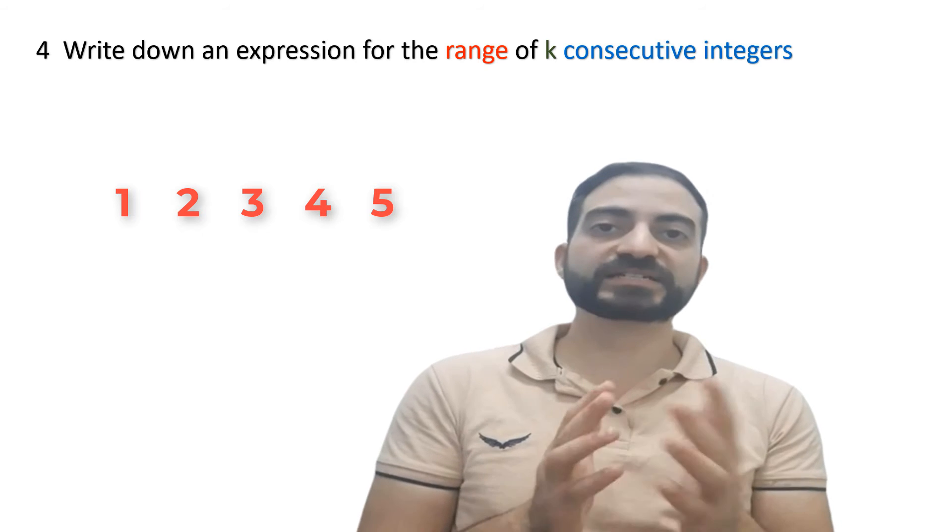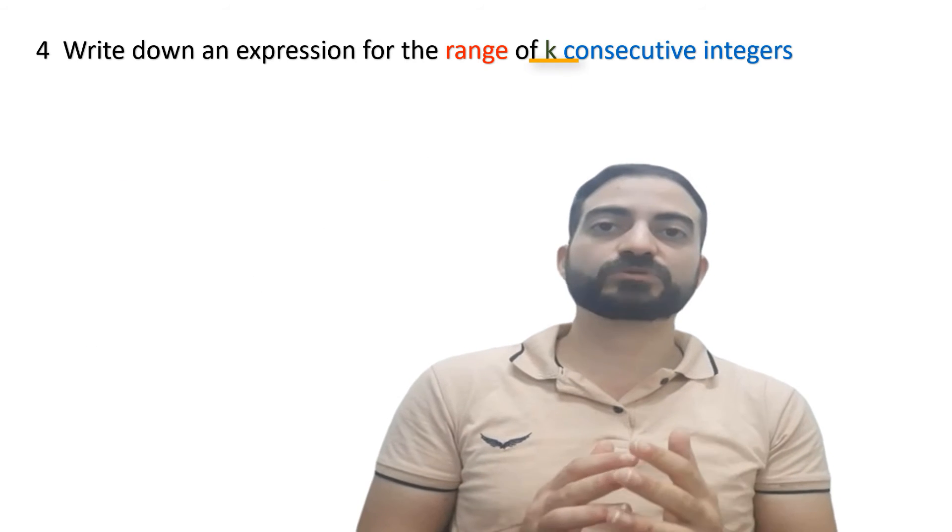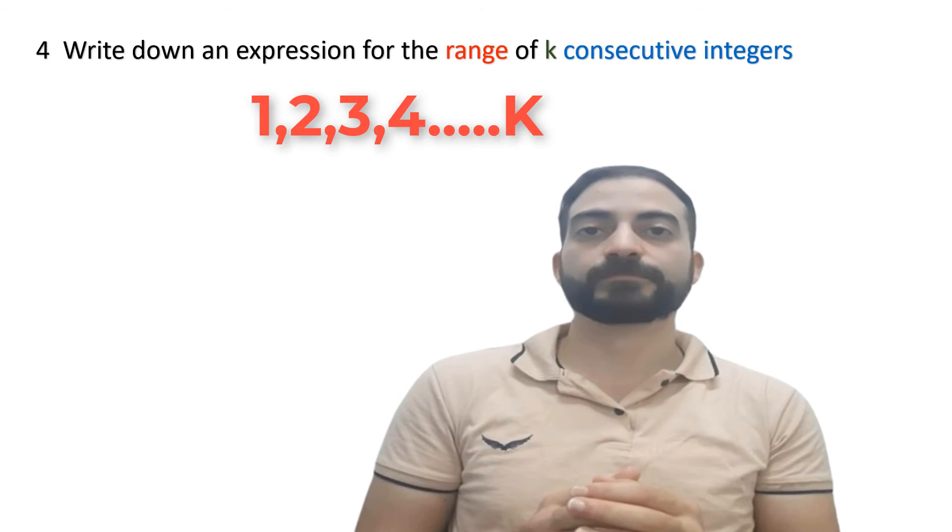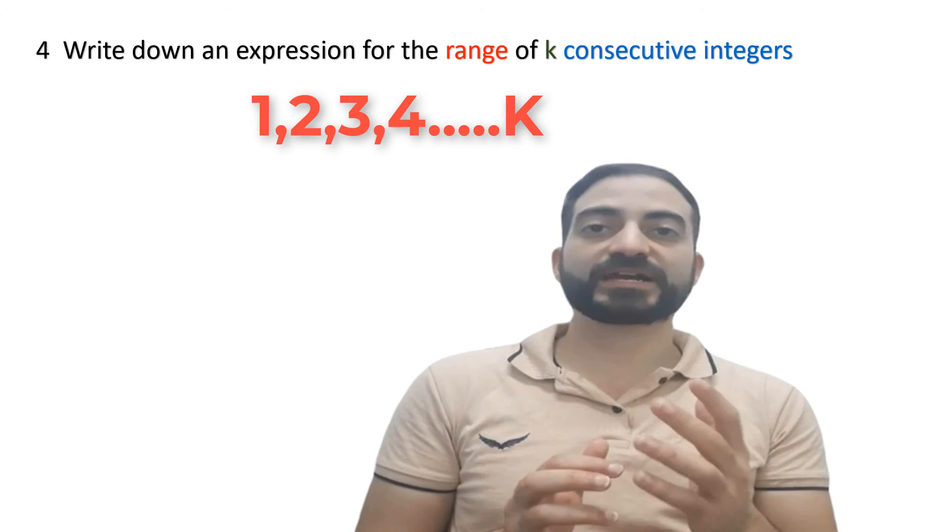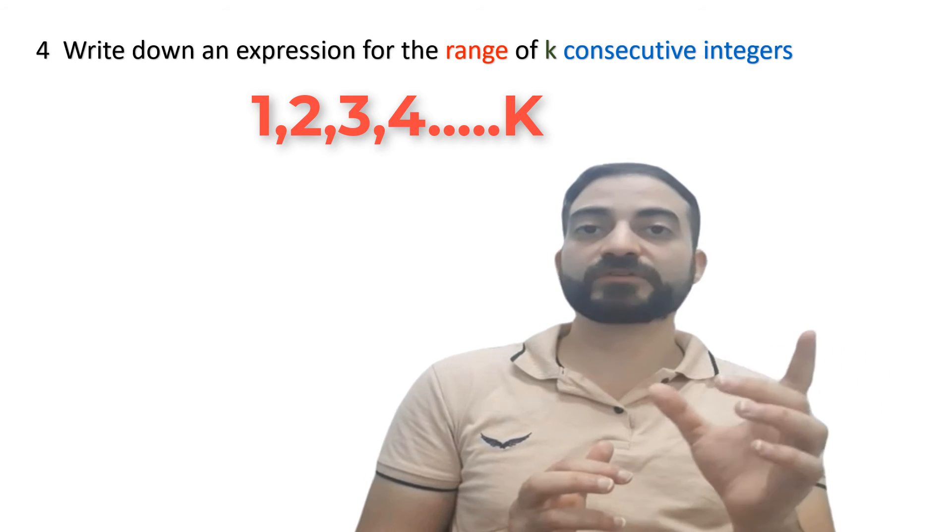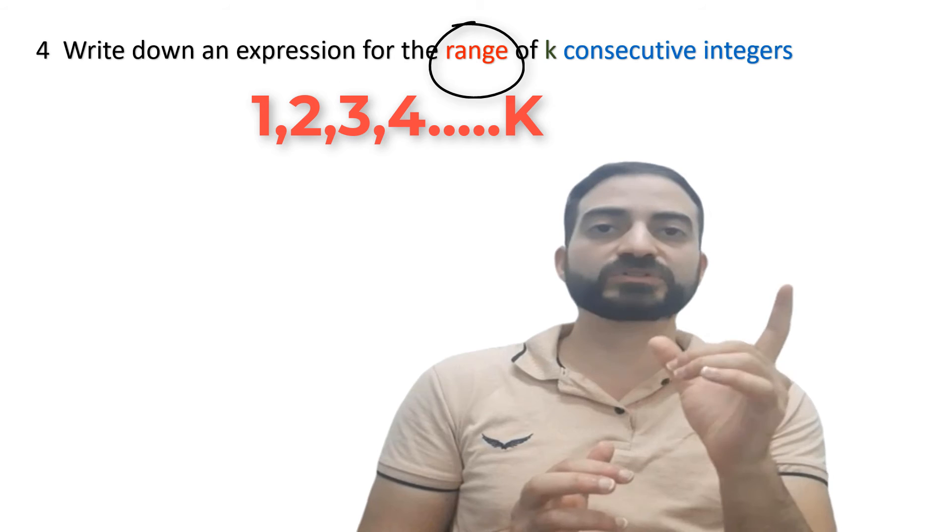But in the question it tells us k consecutive integers. This means that we have this form. What is required of us is to write down an expression for the range of k consecutive integers.